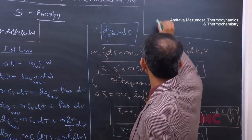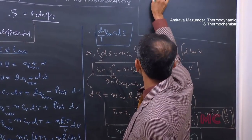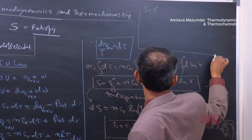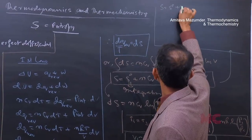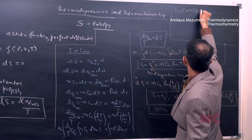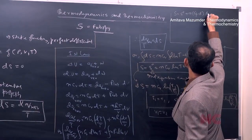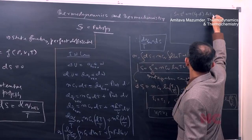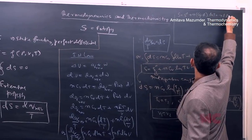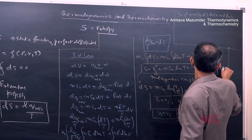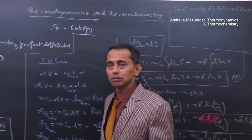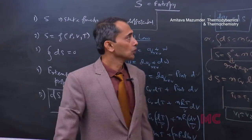In that case, the equation is modified to S equals S₀ plus n(Cₚ minus R) ln(T) plus nR ln(V). This is because Cₚ minus Cᵥ equals R, so Cᵥ is replaced by Cₚ minus R.